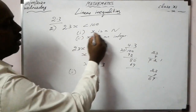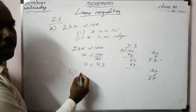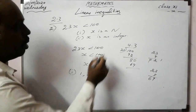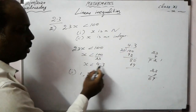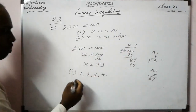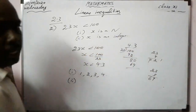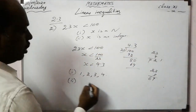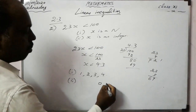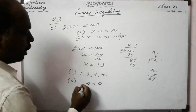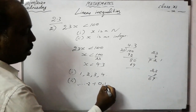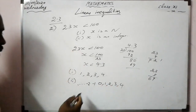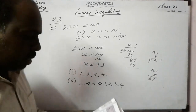For the second part, x is an integer. Integers less than 4.3 include ..., −2, −1, 0, 1, 2, 3, 4, and so on extending to negative infinity.